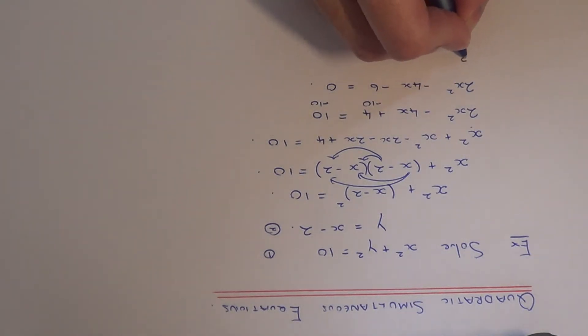So 2x squared divided by 2 is x squared, minus 4x divided by 2 is minus 2x, and minus 6 divided by 2 is minus 3, and 0 divided by 2 is nothing. So we've got a simple quadratic here which we can factorise into a double bracket.